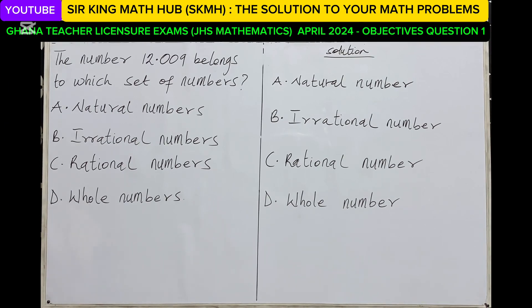The number 12.009 belongs to which set of numbers? So they've given us four sets of numbers. We have natural numbers, irrational numbers, rational numbers, and then whole numbers. So we have to figure out which set of numbers the given number, which is 12.009, belongs to.